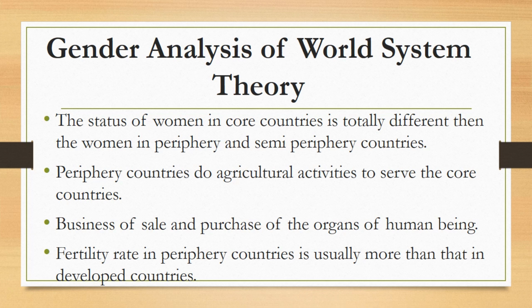Similarly, core countries are also exploiting women in other ways. For example, there is a business of sale and purchase of human organs. Poor countries, which are basically periphery countries, usually sell the body organs of people. Even some semi-periphery countries are involved in such activities — India, which comes under the category of semi-periphery, is a seller of human organs. Core countries purchase women from these states to obtain organs. So again, there is exploitation of women under this theory.